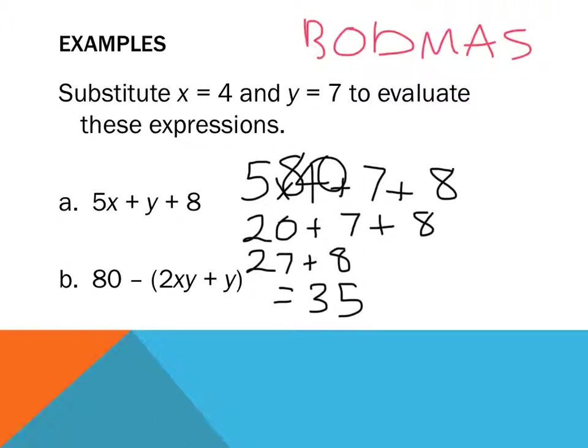80 subtract 2 multiplied by 4 multiplied by 7. Oh, gosh. That looks tricky. 2 multiplied by 4 multiplied by 7 plus 7. Oh, holy moly. Let's look inside my brackets. 80 subtract 2 multiplied by 4 is 8. 8 multiplied by 7 is 56 plus 7. So, what I've done there is I've just done this multiplication in here. So, 2 times 4 is 8. 8 times 7 is 56. And I've simplified that.